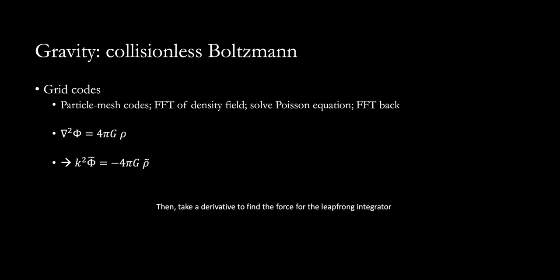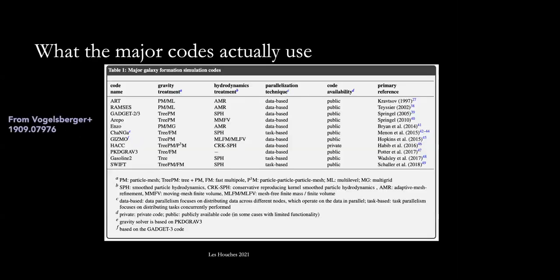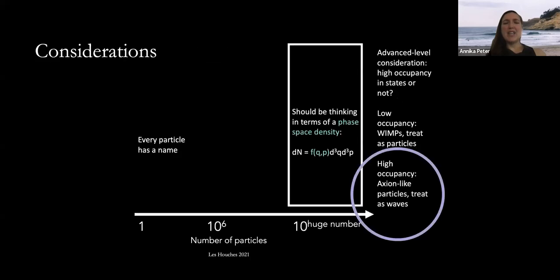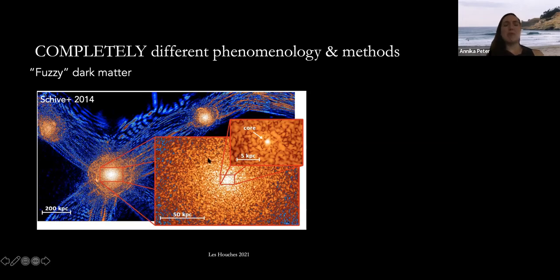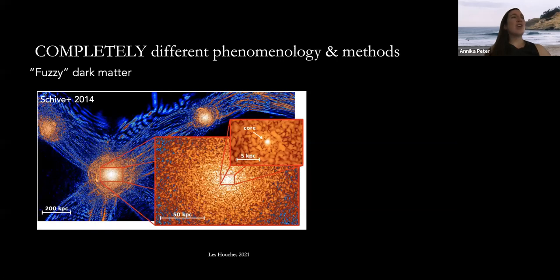Regarding fuzzy dark matter, these fluctuations are on the order of tens to hundreds of million year timescales, at least in the simulations. My collaborator Xiaolong Du is the expert on this — he's been experimenting with different methods to model the effects of these fluctuations without doing a full fuzzy dark matter simulation. They sort of reflect the local dynamical time — not age-of-the-universe type fluctuations, nor super short ones.